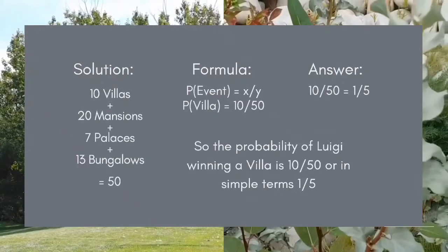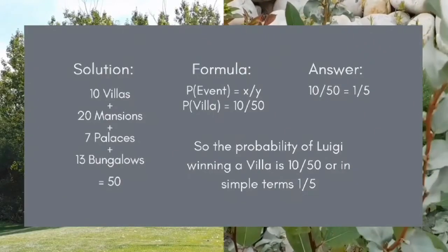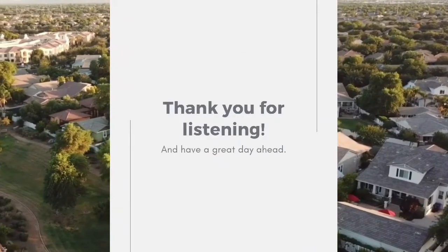For the solution, you have to add all the values, which equal 50. The formula for probability is P(event) = X over Y, where X is the number of favorable outcomes, which is 10, and Y is the total number of outcomes, which is 50. So the probability of Luigi winning a villa is 10 over 50, or in simplest terms, 1 over 5. That's all — thank you for listening and have a great day ahead.